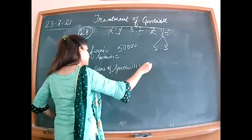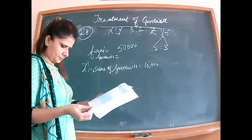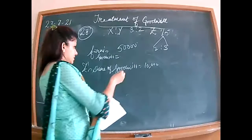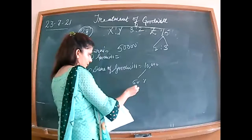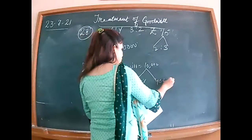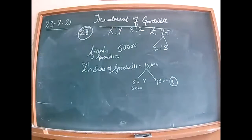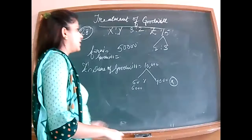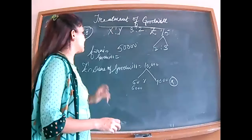Z's share of goodwill: 50,000 into 1/5 = 10,000. Z brings 60% of that in cash — that is 6,000. The remaining 4,000 he is not bringing. There is already 20,000 goodwill in the books which needs to be written off. Z takes 1/5th from X — so X's sacrifice is 1/5 into 2/5, and Y's sacrifice is 1/5 into 3/5.